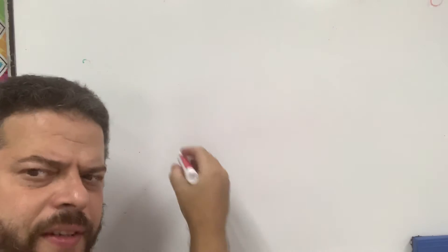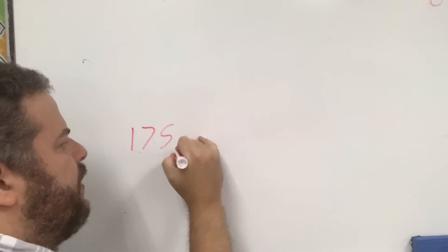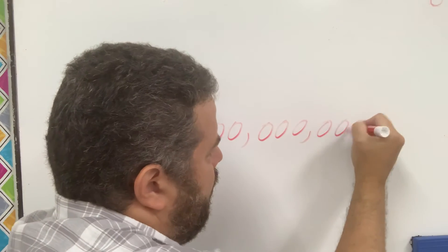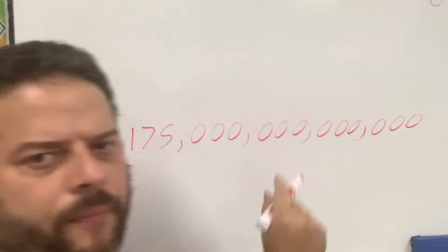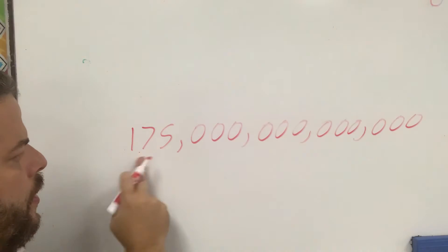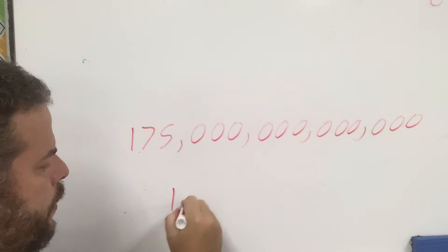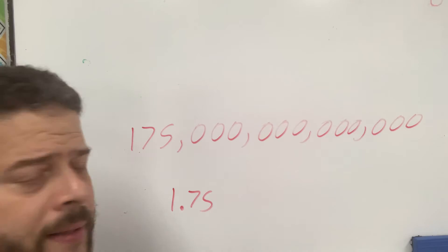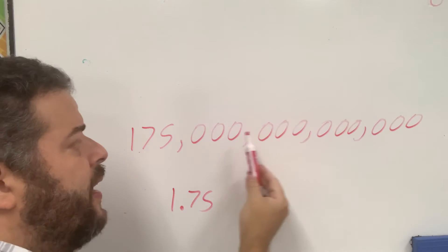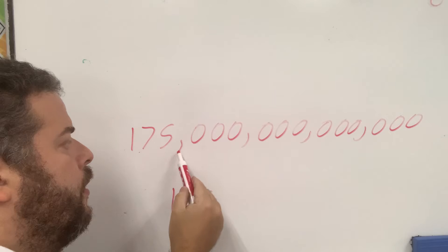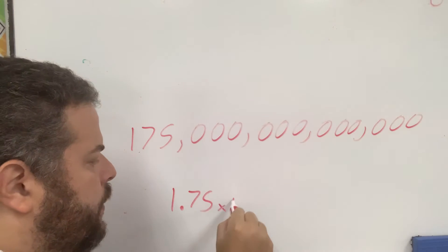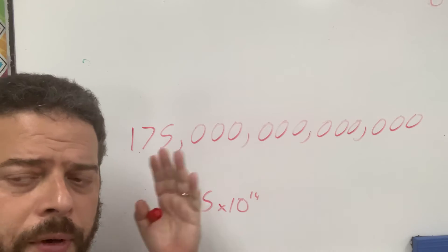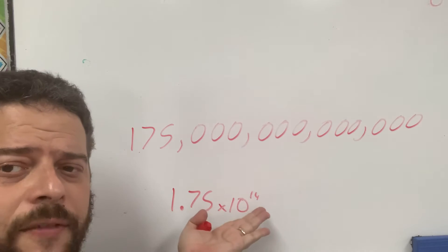Let's go over another example, which is normally what you're going to see: 175,000,000,000,000 — a huge number. Again, the number would be 1.75. And now let's see how many spots I moved my decimal: 3, 6, 9, 12, 13, 14 — times 10 to the 14. So that's how you rewrite numbers in scientific notation.